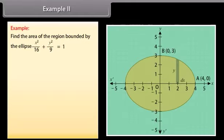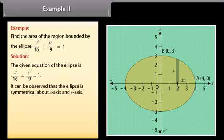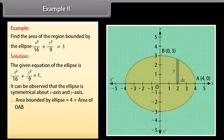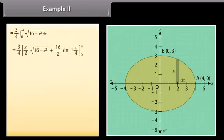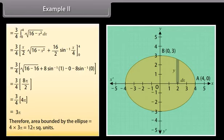Example 2: Find the area of the region bound by the ellipse x²/16 + y²/9 = 1. Solution: The ellipse is symmetrical about both axes. Therefore, the area bound by the ellipse = 4 × area of OAB. Area of OAB = ∫ from 0 to 4 of y dx. By solving, area of OAB = 3π. Therefore, area bound by the ellipse = 4 × 3π = 12π square units.